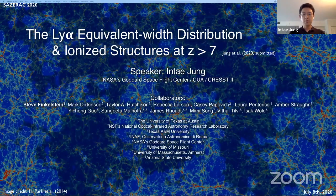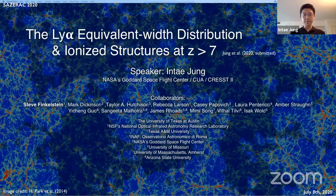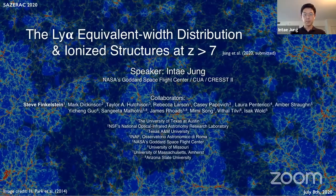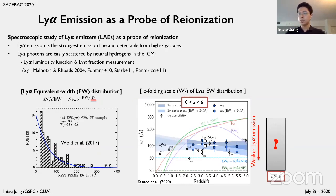This talk is based on my recent paper, which is extended from my PhD study with Steve Finkelstein, and it has been submitted about a month ago so it'll be available soon on arXiv. This week we had a great discussion about Lyman-alpha emission as well as reionization, because Lyman-alpha visibility is one of the most promising probes of reionization, such as measuring the Lyman-alpha fraction or looking at the Lyman-alpha luminosity function.